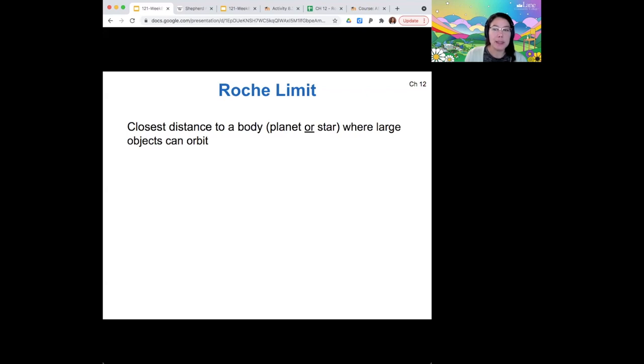So the Roche limit is basically how close can a large object orbit near a large body, such as a planet, without getting torn apart by the tidal forces. And so the formula for this is here.